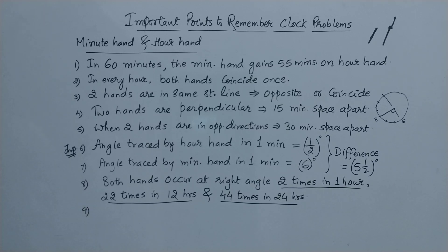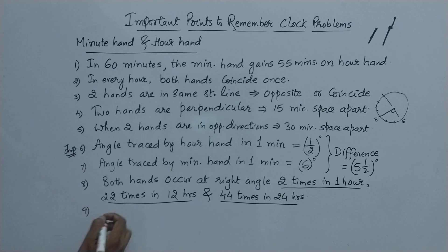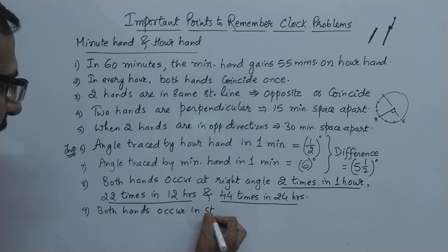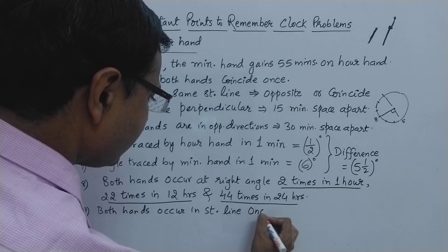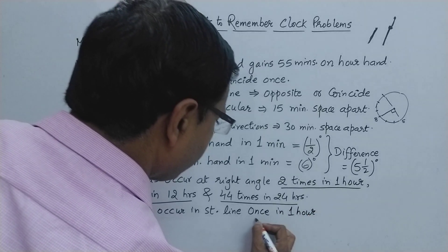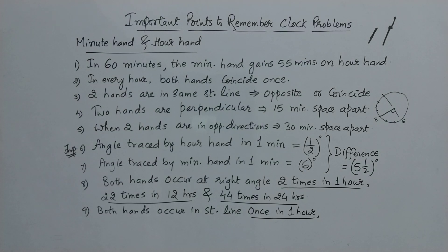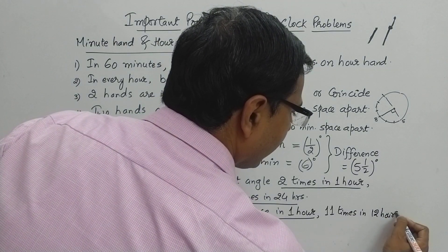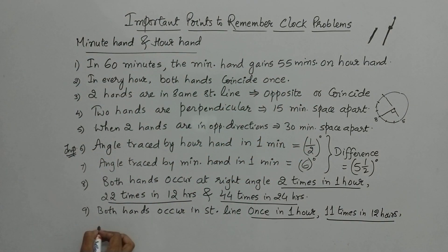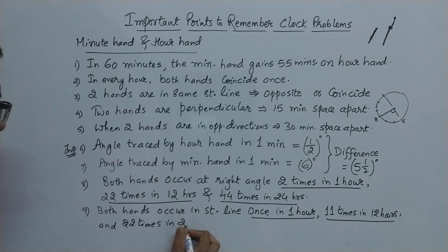And the final ninth point: now we talked of right angle, so now we talk of being in a straight line. Both hands occur in a straight line once in one hour. In 12 hours it happens 11 times. And finally 22 times in 24 hours.